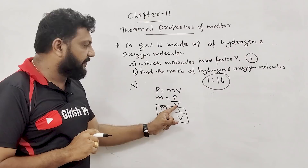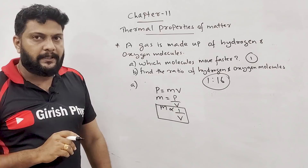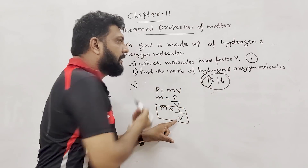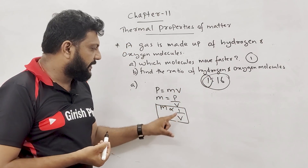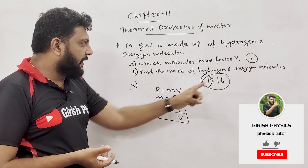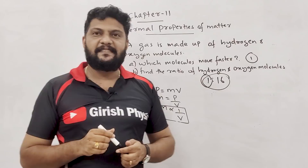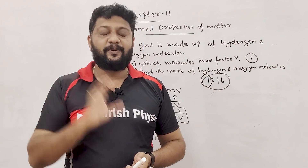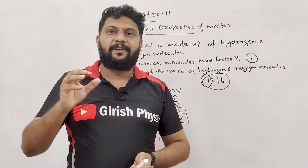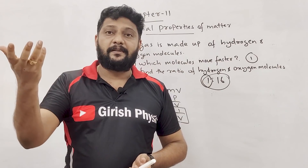P equals mV. M equals P divided by V. Mass is inversely proportional to velocity. Oxygen molecules are 16 times the mass of hydrogen molecules — because of mass, velocity follows inversely.